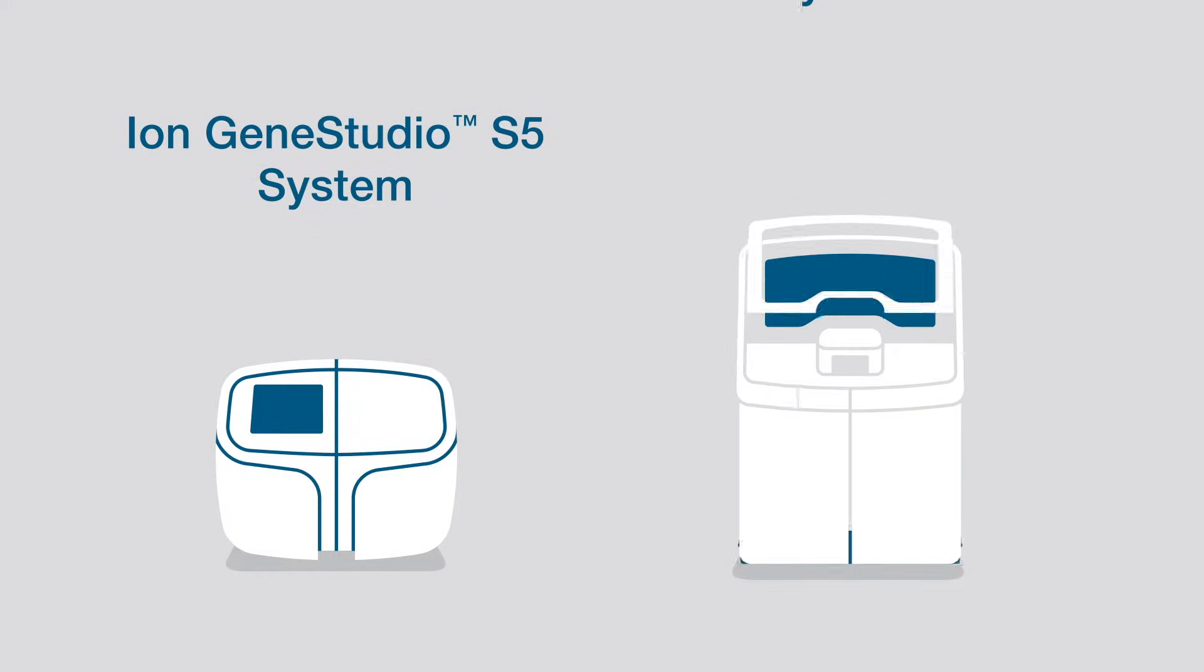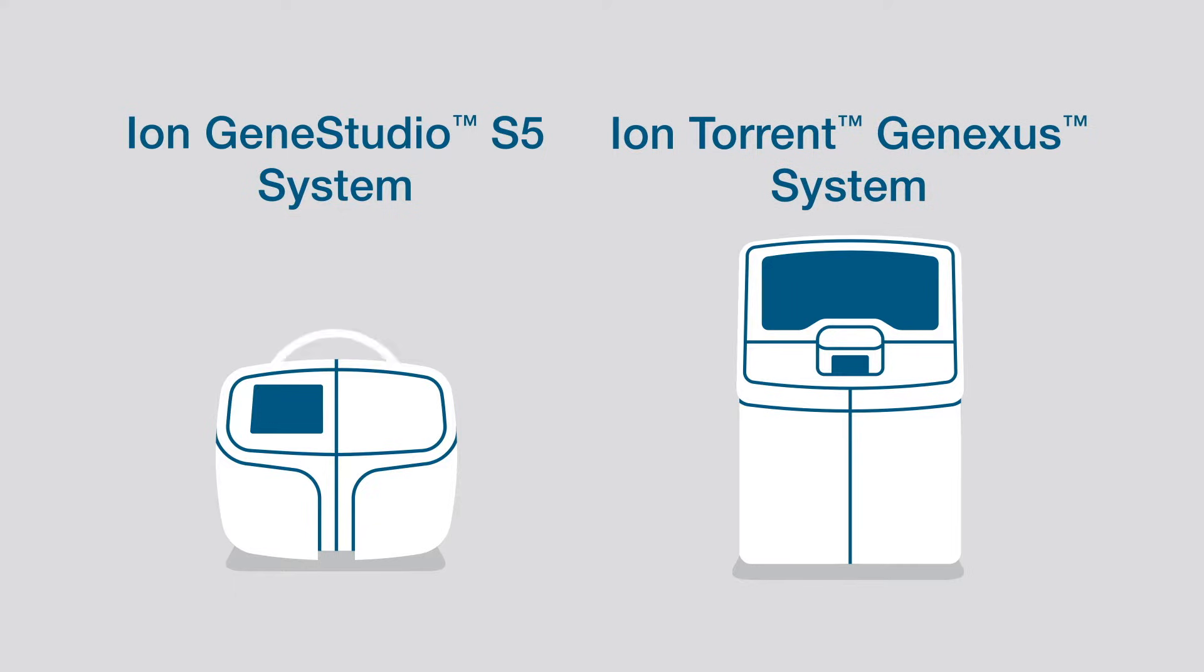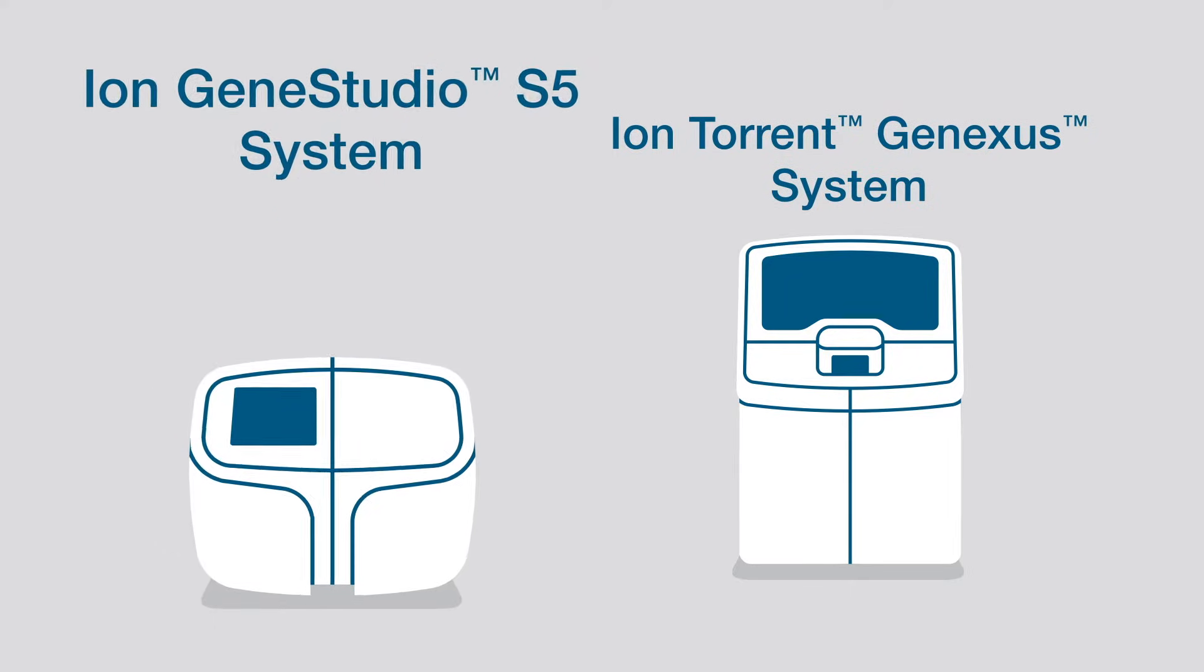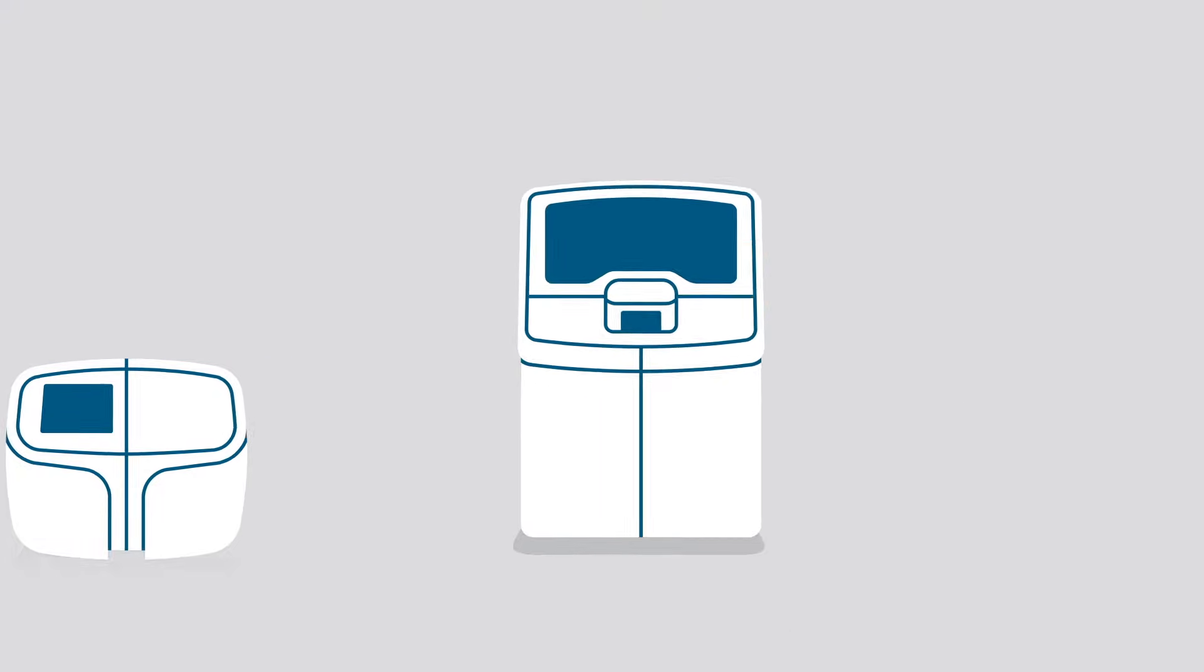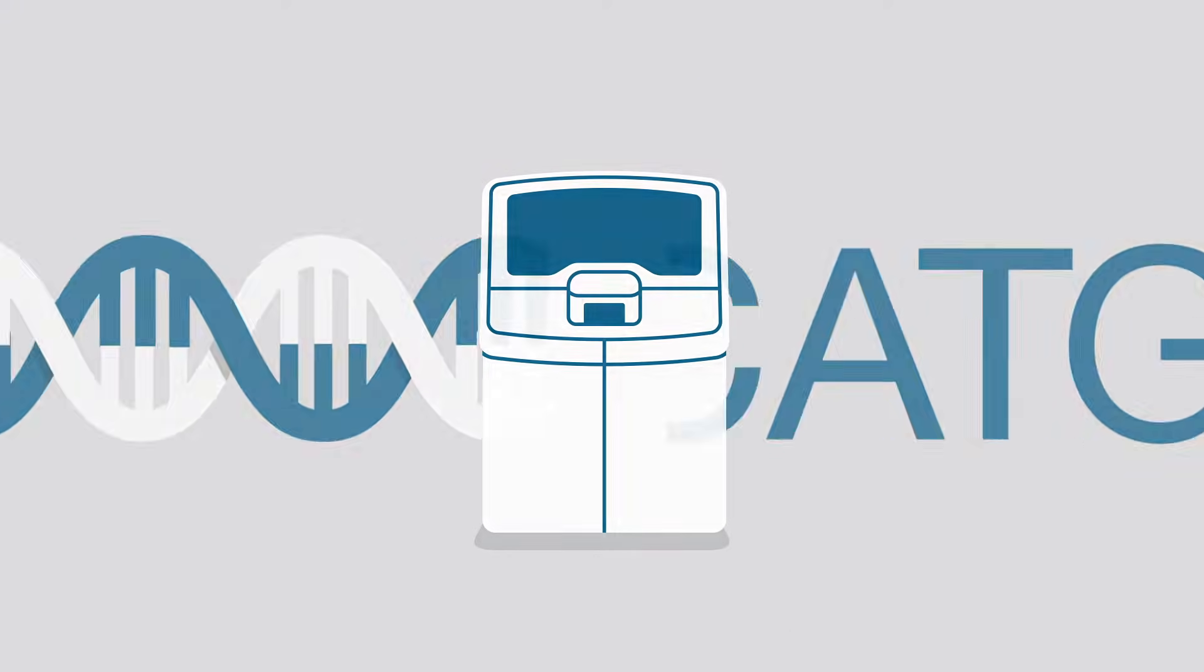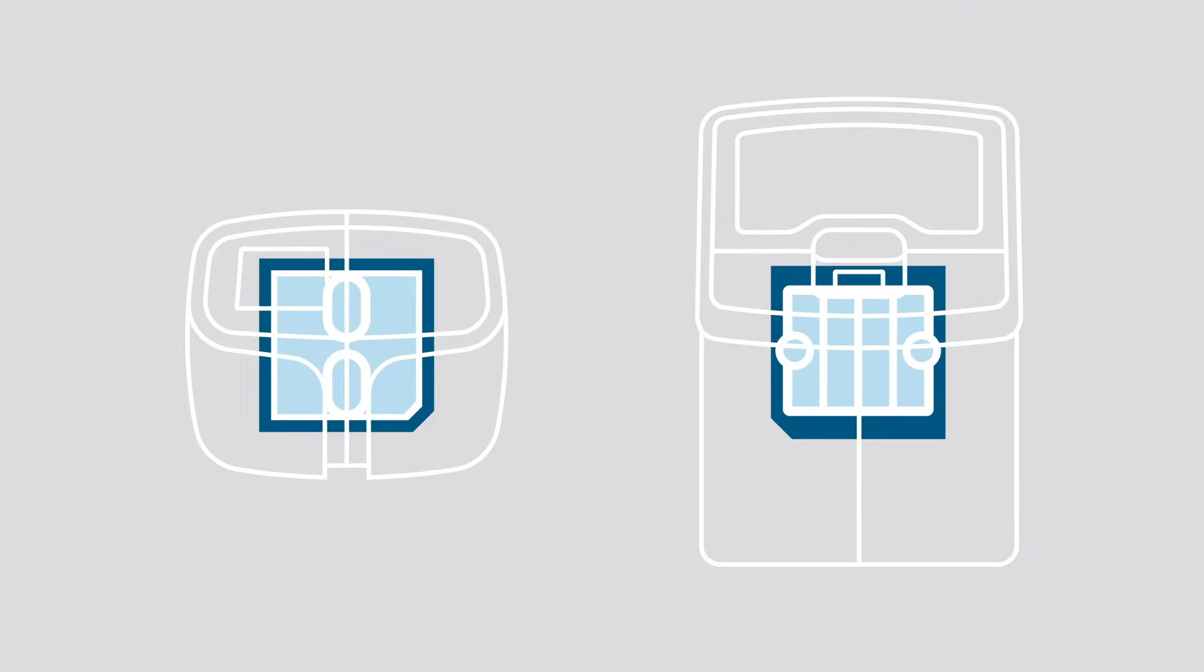Ion Torrent Technology from Thermo Fisher Scientific takes an entirely new approach to next generation sequencing, making it massively scalable, faster, simpler, and more affordable than ever before. The sequencing of DNA is done using a semiconductor chip, similar to the chip found in your digital camera.